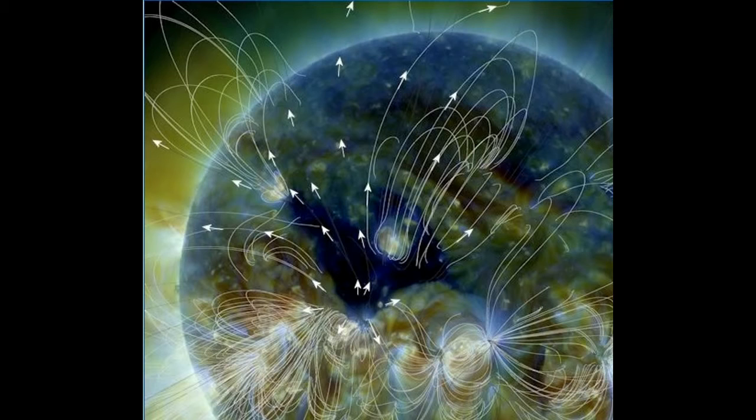Stronger radiation storms are possible in the days ahead, however, as potent sunspot R-1934 rotates toward the western limb with a strong magnetic connection to Earth. Flares from R-1934 could send more protons in our direction.